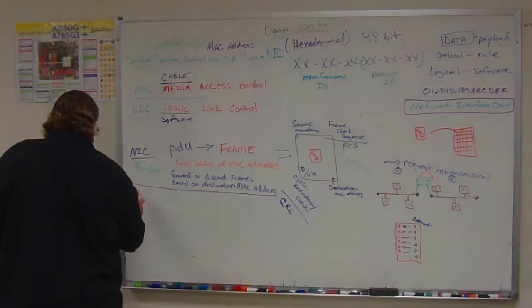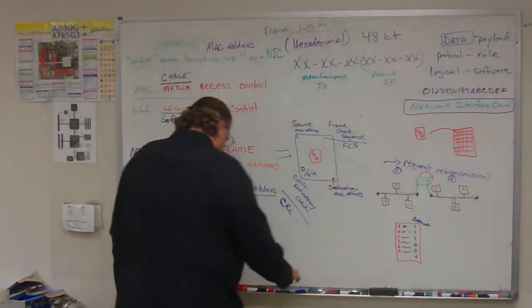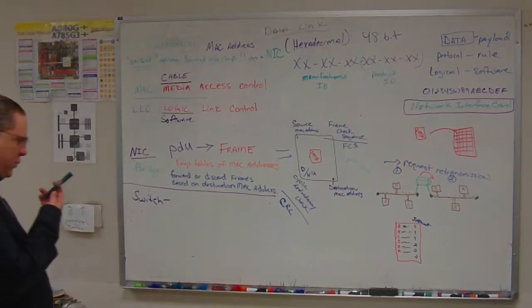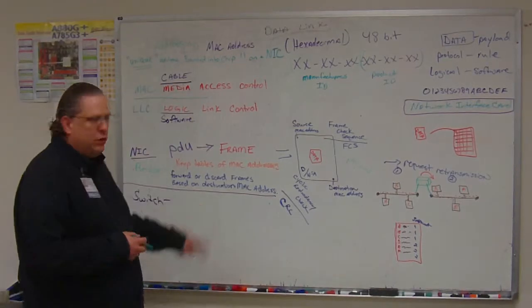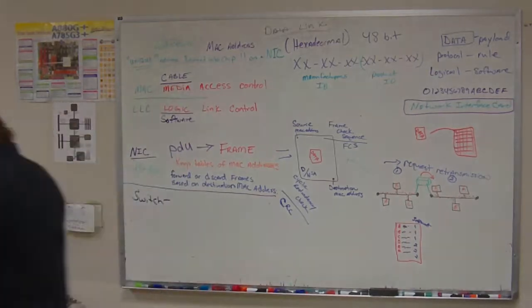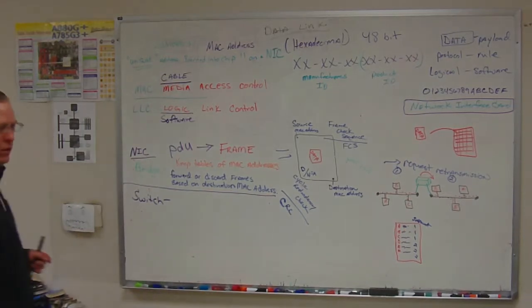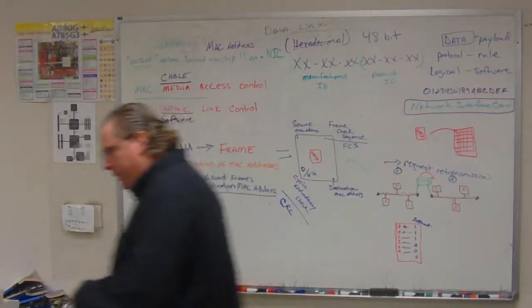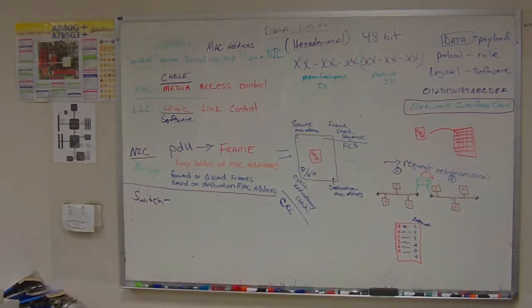And the last device at this layer we're going to talk about is the switch. The switch is kind of like a hub. It is a one in multi out device. As a matter of fact, we can have a look at a switch and see how it's very similar to a hub. If I can find my switch. There it is! Way over there! Alright, so here we have a corporate switch. Lots of ports on the front. There's that word, ports.